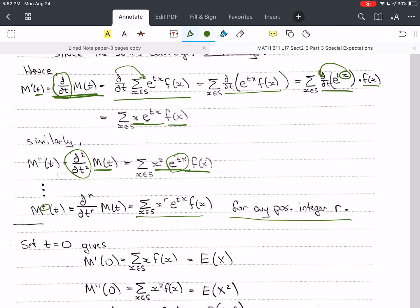And the r-th derivative becomes sum of x to the r e to the tx f of x. And that's r is any positive integer that works for that. Now, after we take the derivative,